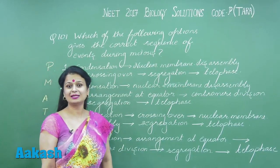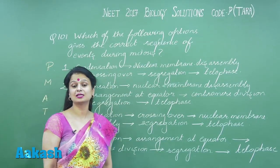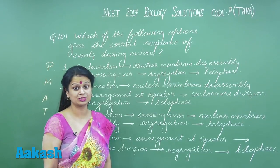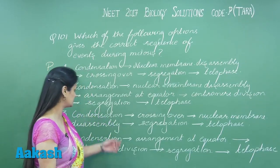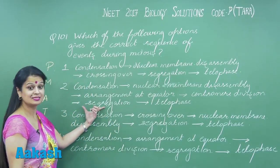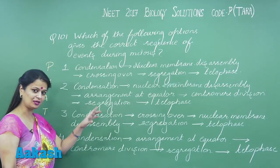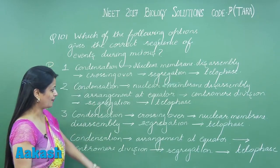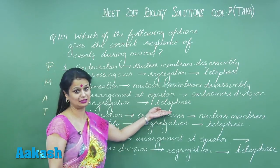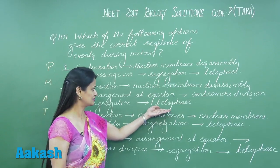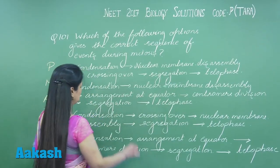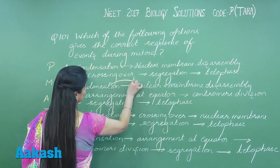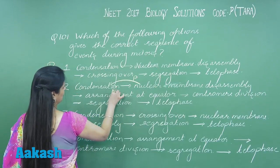During anaphase, when the centromere splits, the chromatids start moving towards the opposite poles. This is what you call segregation, which also occurs during anaphase. The last phase is telophase.